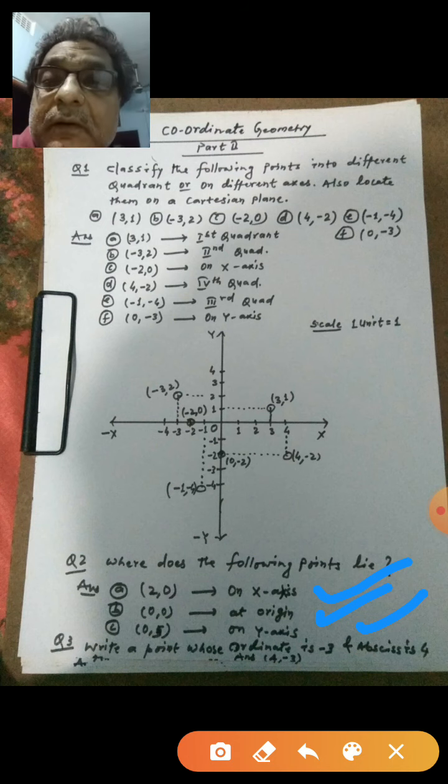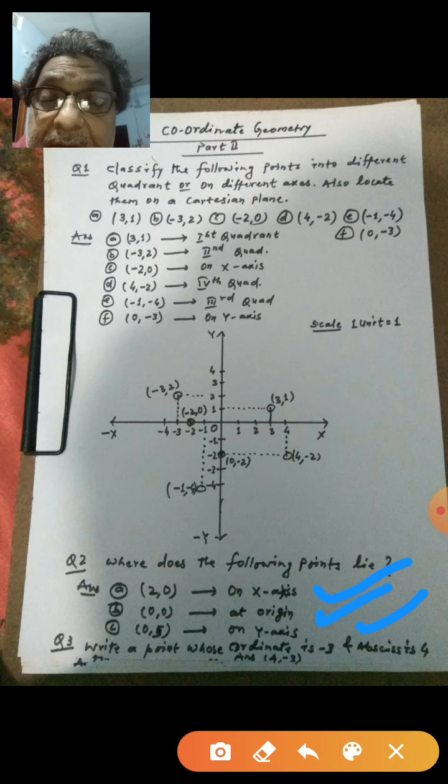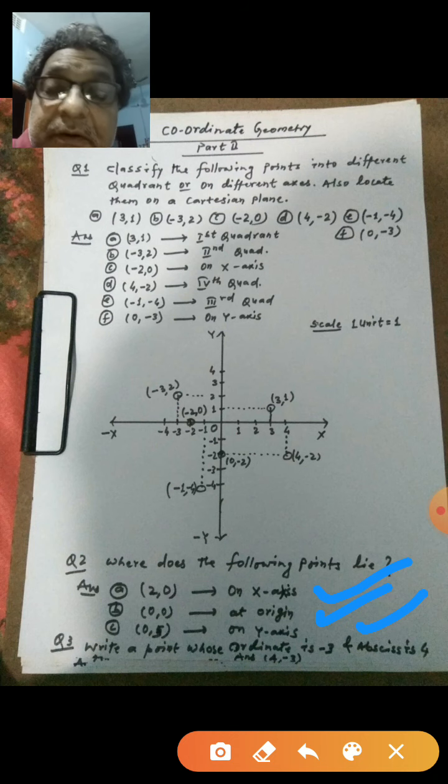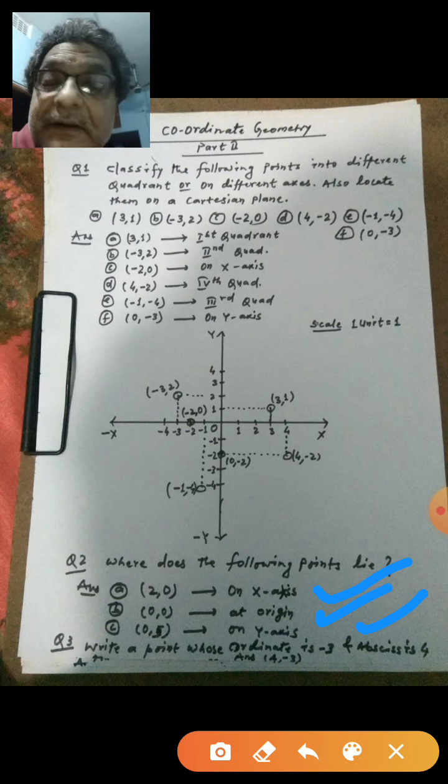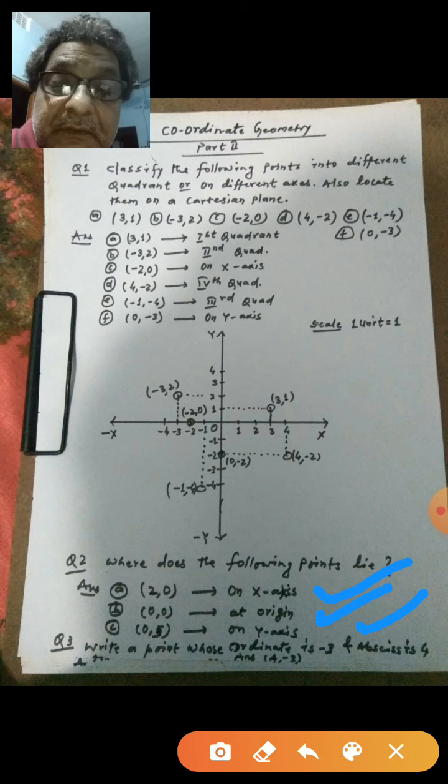Now one more question is there: write a point whose ordinate is minus 3 and abscissa is 4. So you should recall, you know first we write x value, that is abscissa, and then ordinate, y value. So question is given where ordinate has been given first and later on abscissa. So don't write just taking two values. We should think here which one value should come first. So abscissa is 4, ordinate is minus 3, so point is inside small bracket, we will write 4 comma minus 3.